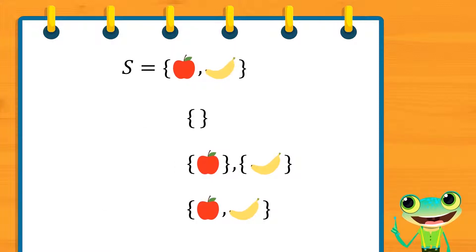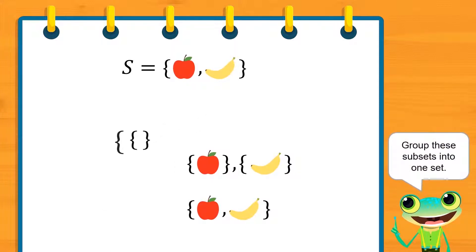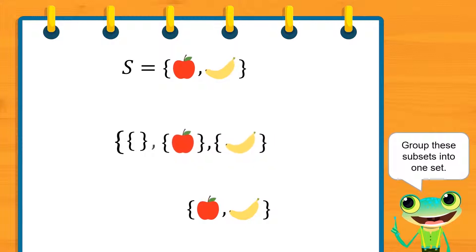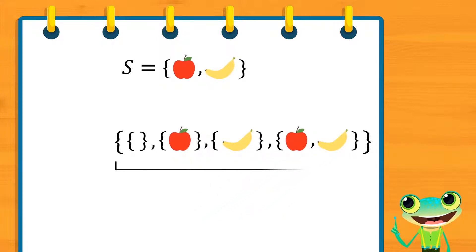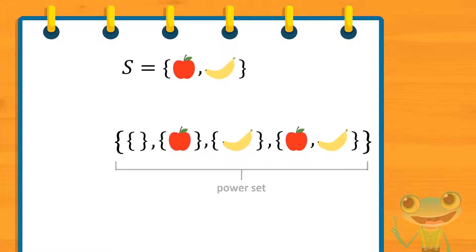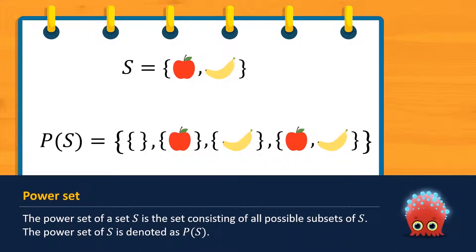Now, let us group these subsets into one big set. This new set is known as the power set of set S. The power set of a set S is the set consisting of all possible subsets of S. The power set of S is denoted as P of S. Observe that the elements of the power set are sets themselves.